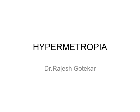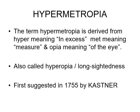Last time we have seen about myopia. In errors of refraction, we know that emmetropia is optically normalized and can be defined as a state of refraction wherein parallel rays of light coming from infinity focus on the retina. In myopia, rays coming from infinity focus in front of the retina. The opposite happens in hypermetropia, that is called long-sightedness. The term hypermetropia is derived from hyper meaning in excess, met meaning measure, and opia meaning of the eye.